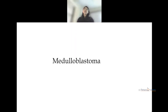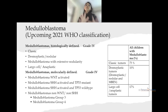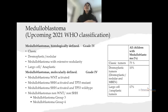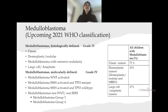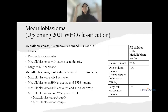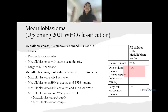Now let's talk about medulloblastoma. This is the upcoming 2021 WHO classification for medulloblastoma. The not otherwise specified category has been removed. The histologically defined categories include: classic type, desmoplastic nodular type, medulloblastoma with extensive nodularity, and large cell anaplastic type. Molecularly defined, it has the pathway molecular subtypes — medulloblastoma with WNT activated (wingless activated) and medulloblastoma with sonic hedgehog activated.